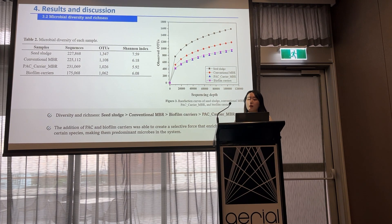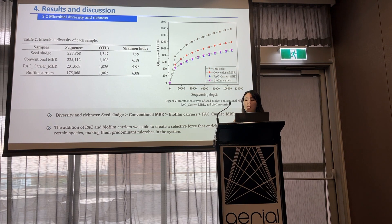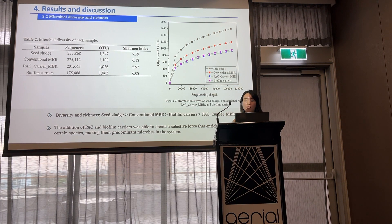As a result of microbial analysis, Table 2 shows the sequencing depth and observed operational taxonomic units (OTUs), along with the diversity indicator as Shannon index for each sample. Rarefaction curves are also generated based on the observed OTUs to examine the difference in microbial richness. The diversity and richness were highest in the seed sludge and then reduced by the transition of feed water to source-separated urine, and further decreased in the incorporated MBR. This result might be because the additional PAC and biofilm carriers were able to create a selective force that enriched certain microbial species, making them predominant microbes in the system.